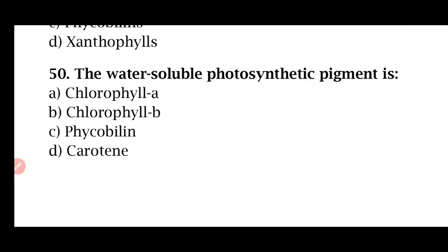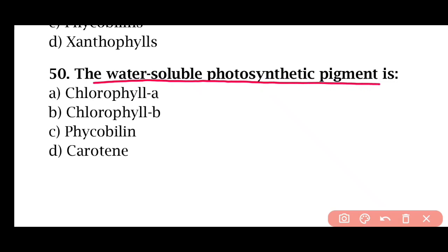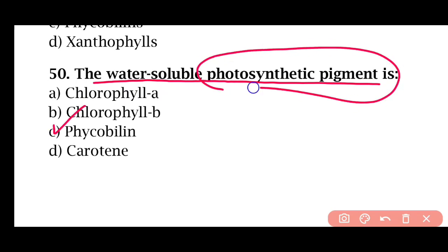Question 50: The water-soluble photosynthetic pigment is — Chlorophyll A, Chlorophyll B, phycobilin, or carotene. The correct answer is option C. Phycobilin, such as phycoerythrin, is a water-soluble photosynthetic pigment.